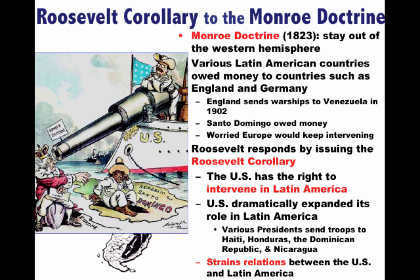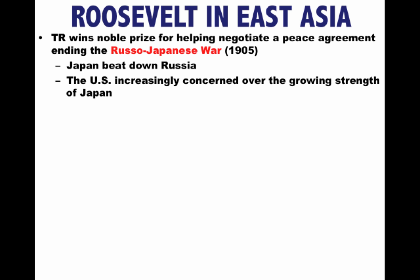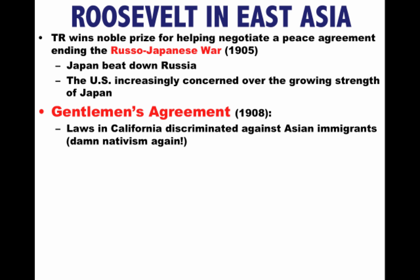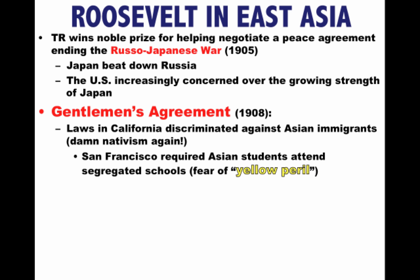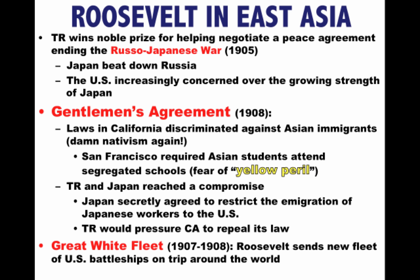In East Asia, Roosevelt won the Nobel Prize for helping negotiate a peace agreement ending the Russo-Japanese War. Japan had basically beaten Russia, and the U.S. was increasingly concerned over Japan's growing strength in Asia. The two countries also signed a Gentleman's Agreement in 1908. The background: laws in California discriminated against Asian immigrants — San Francisco required Asian students to attend segregated schools, and there was fear of a 'yellow peril.' Japan was deeply offended. Under the Gentleman's Agreement, Japan secretly agreed to restrict the immigration of Japanese workers to the U.S. by withholding passports, and TR would pressure California to repeal its discriminatory laws.